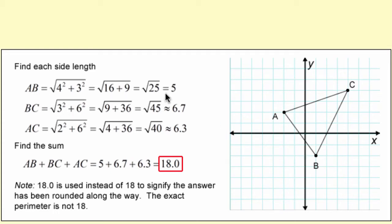AB is found to equal 5 using the Pythagorean Theorem. BC is about 6.7, AC is about 6.3. So then you add all those, find the sum to get the perimeter of triangle ABC, and that works out to be 18.0. An important point there—it's not exactly 18, it's rounded so it's 18.0.